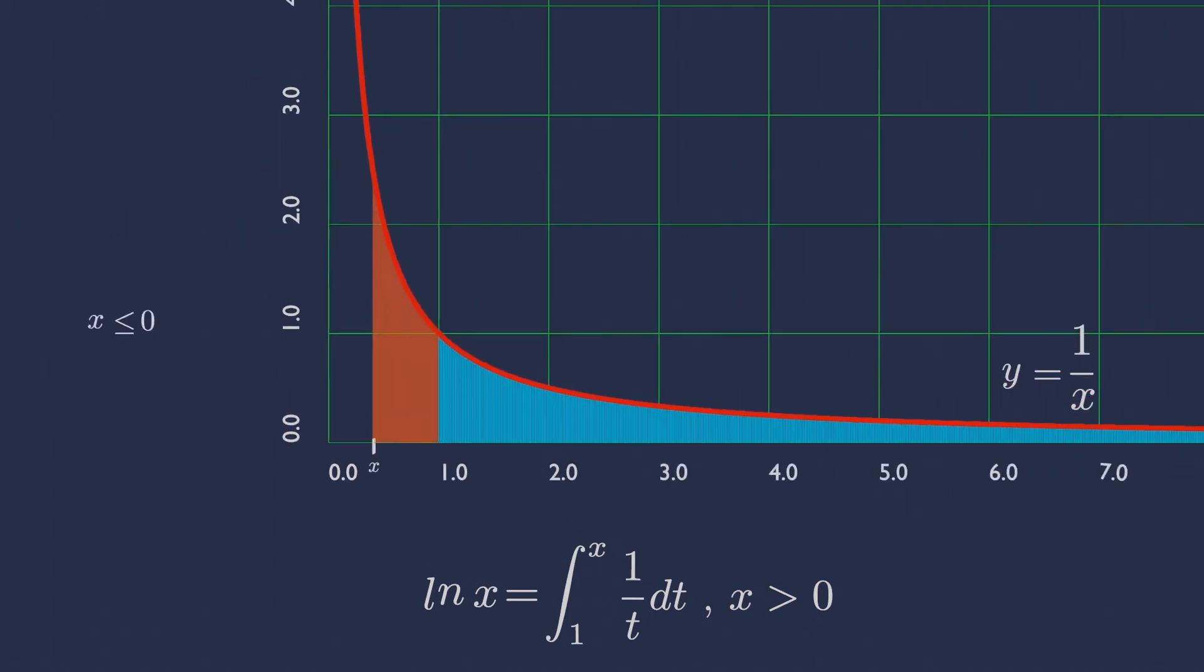And the function is not defined for x less than or equal to 0. Also, if we integrate from initial position 1 to final position 1, then ln 1 will be 0. So natural logarithm of 1 is always 0. This means the curve 1 by x has 0 area.